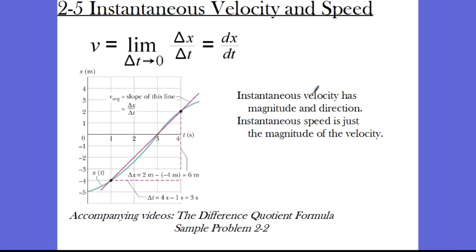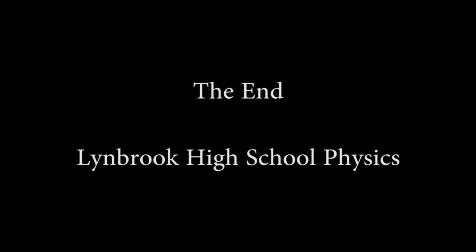So let's note here, instantaneous velocity has magnitude and direction, whereas instantaneous speed is just the magnitude of that velocity. So if I had an instantaneous velocity of, just to pick a number, plus 7 meters per second, then that is velocity because it has magnitude of 7 and it has direction in the positive direction. So the velocity would be plus 7 meters per second. The instantaneous speed would just be 7 with no direction associated with it. Thank you.